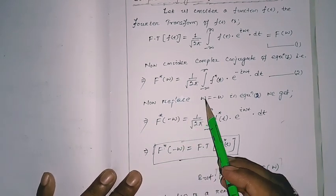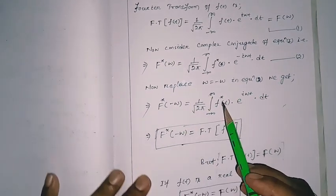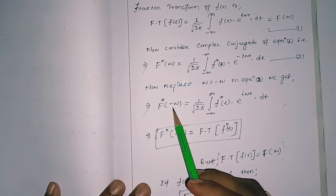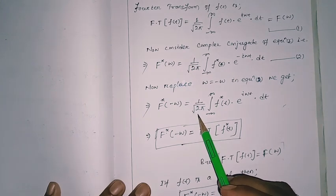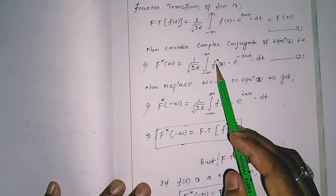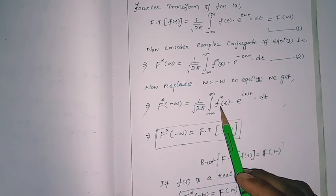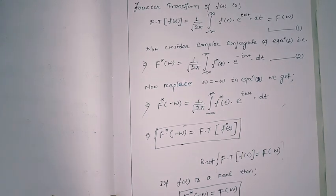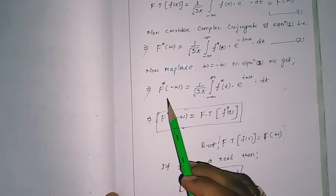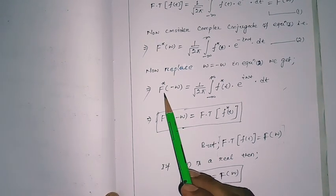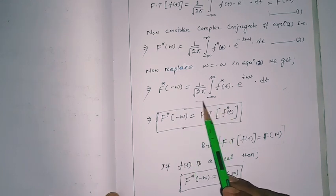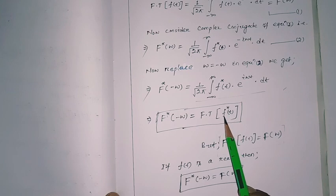Now we replace ω with minus ω in equation number 2. What we get is: the complex conjugate of capital F of minus ω equals 1 over 2π times the integral from minus infinity to plus infinity of the complex conjugate of small f(t) times e to the plus iωt dt. So here we find that the complex conjugate of capital F of minus ω is a Fourier transform.